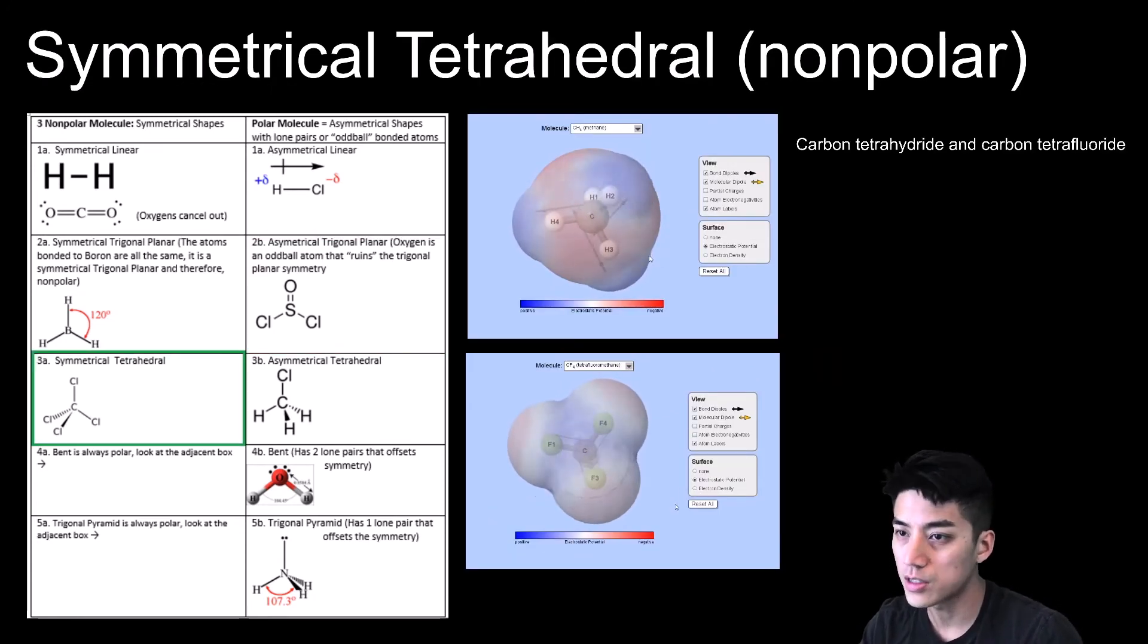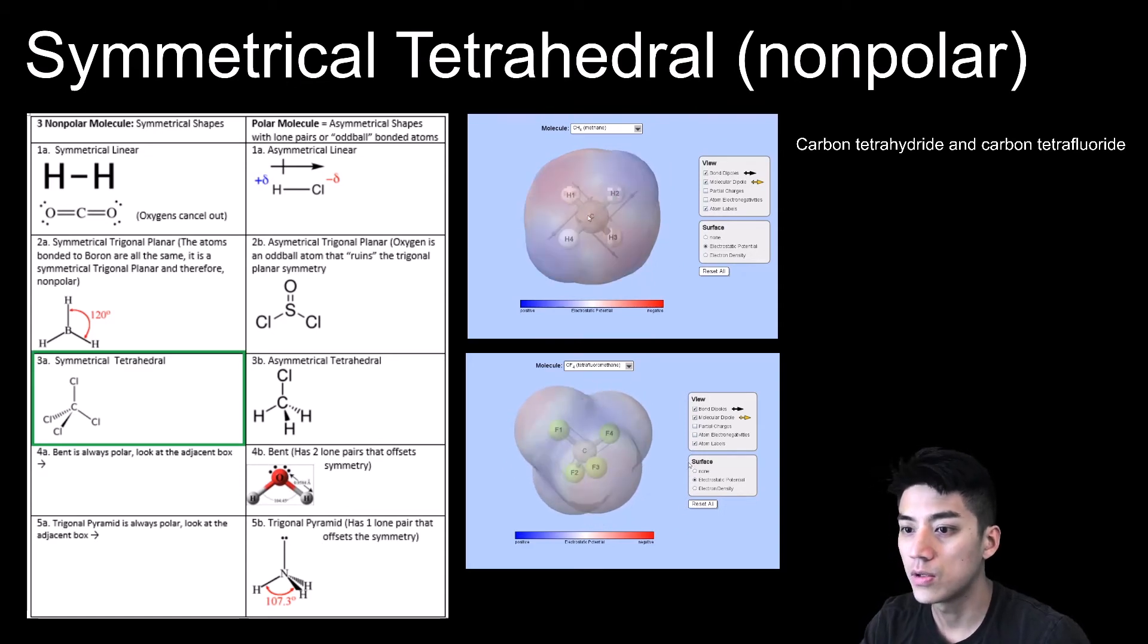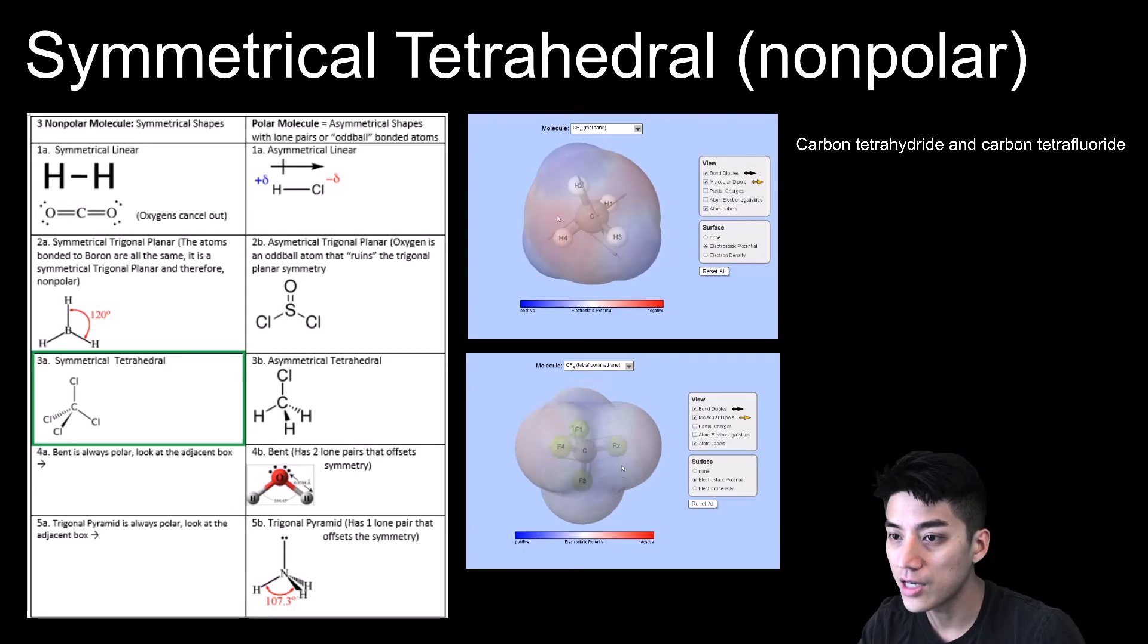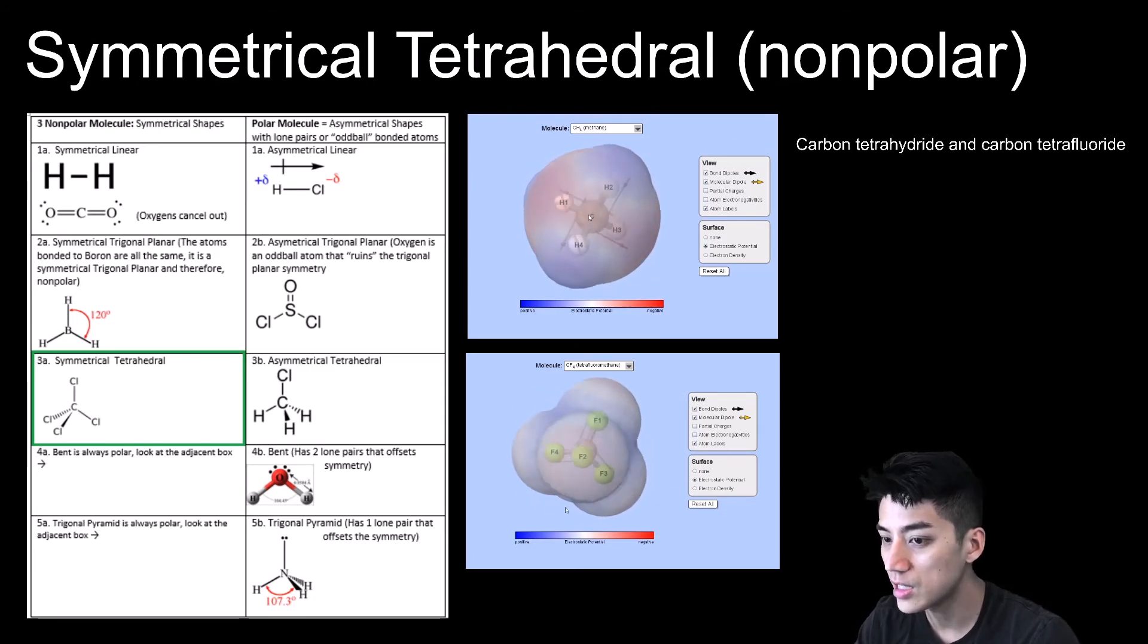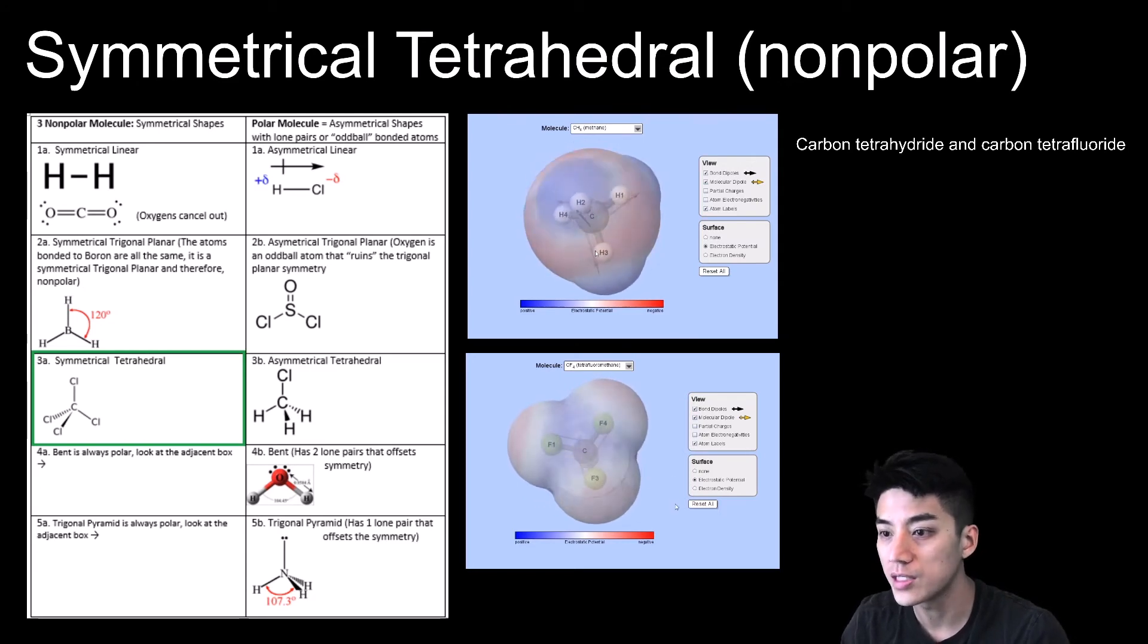These two molecules are symmetrical tetrahedral, which means it will be nonpolar. So you can see how carbon tetrahydride at the top there, and carbon tetrafluoride, even though those are covalent polar bonds between the C and the F, or the C and the H, because you have symmetry on all four ends, meaning those are all just four of the same atoms, you end up with a molecule that is nonpolar overall because it's symmetrical.